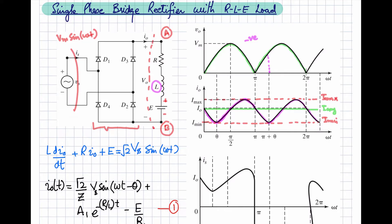If the inductance is low, there may be discontinuity in the current — you can have discontinuous current at the load. It depends on the value of the inductance. For sufficiently high inductance the current is continuous, and for infinitely high inductance the load current will be a straight line, because the inductor does not allow any change in current.